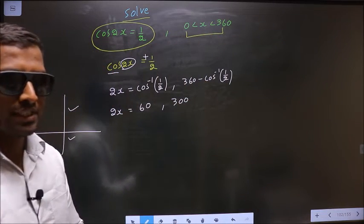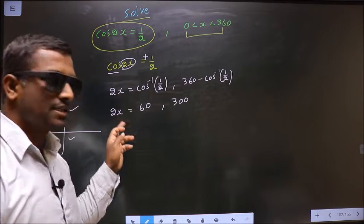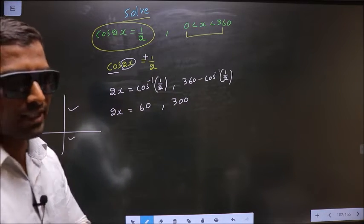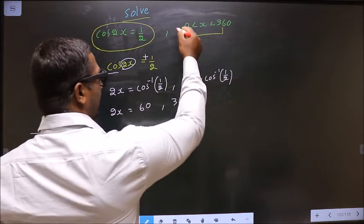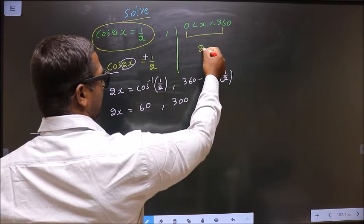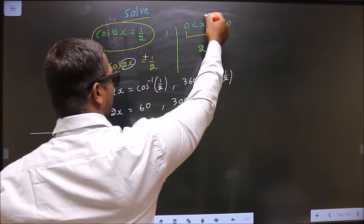Now the question arises: shall I find more angles for 2x or not? How will we decide that? Based on x lies in the interval 0 to 360, then 2x will lie in what interval? To answer that we should multiply by 2.